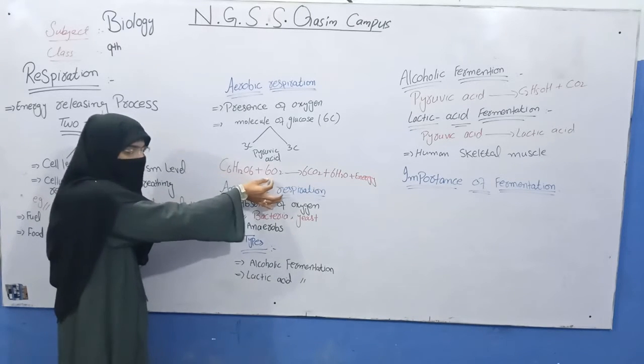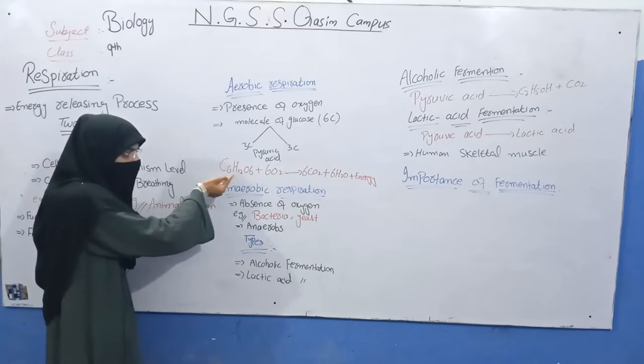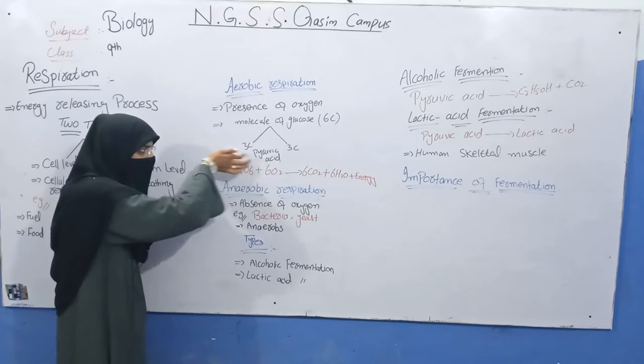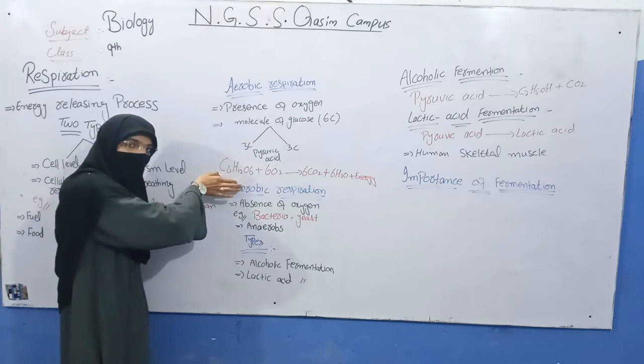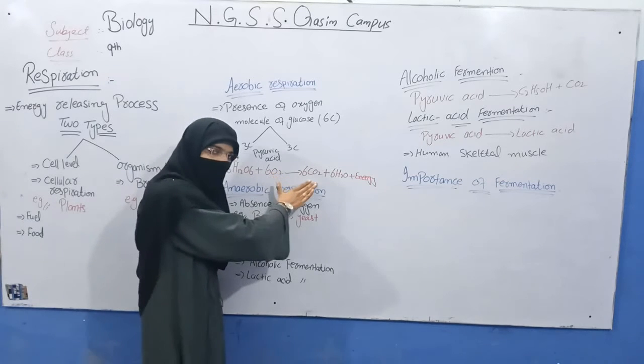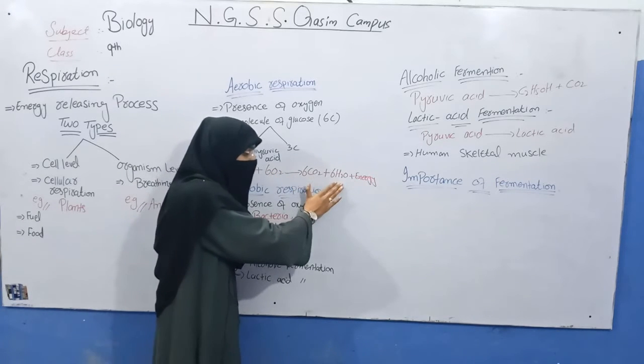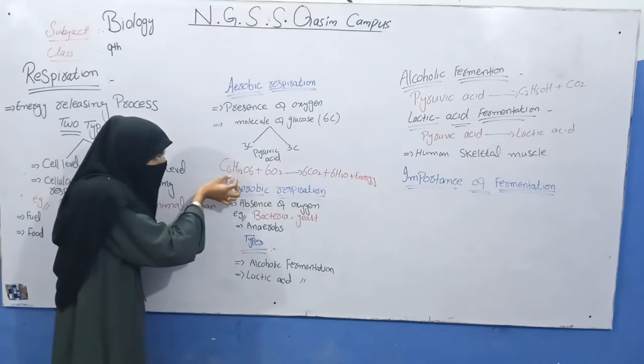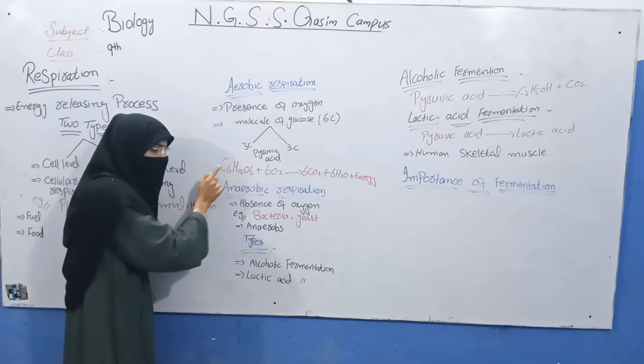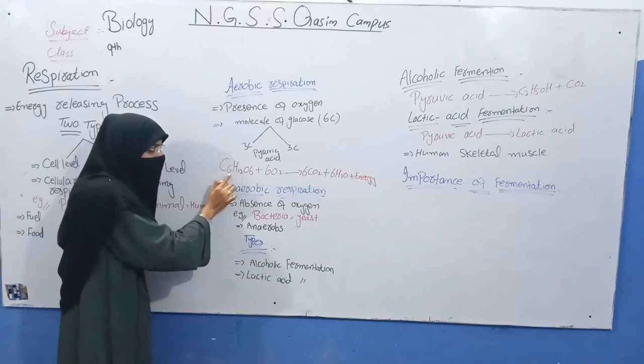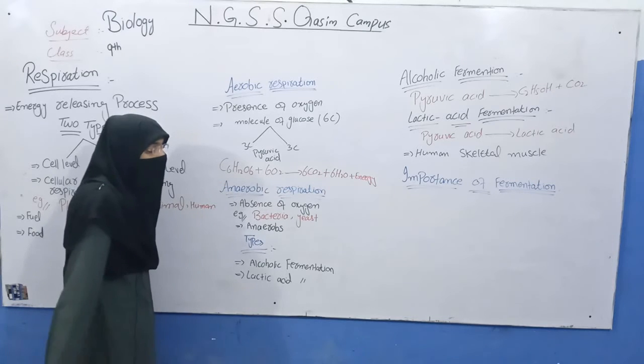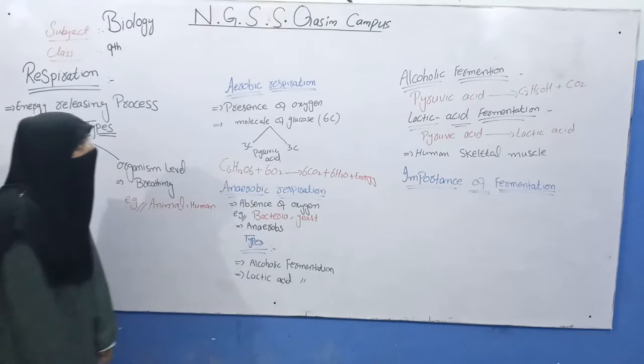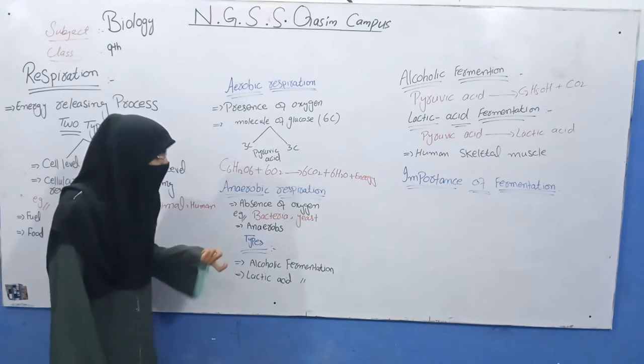In aerobic respiration, glucose and oxygen are added. Glucose is an organic compound with carbon and hydrogen. When extra oxygen is added to carbon and hydrogen bonds, six carbon dioxide molecules and six water molecules are produced, and energy is released.